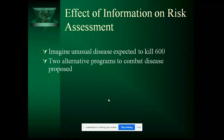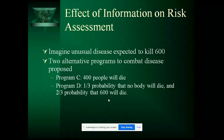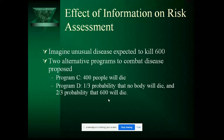Imagine an unusual disease expected to affect 600 people. In one program, 400 people all die. In the other, there is a one-third probability that nobody will die and a two-thirds probability that 600 will die. This statistical data will come from experiments carried out by engineers prior to the incident. The experiments play a very important role in assessing the risk factor.